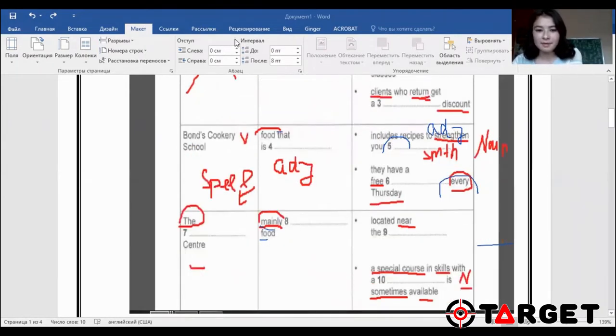They have a free something every Thursday. So again, we're going to put a noun, because there is a and free. We have an adjective. So we need only a noun. And number seven, usually in questions like that, when we write a name or address, usually it will be spelled, but it's not always like that. Sometimes you may guess yourself. If it's easy, if it's common one, like the word red, black, saint, they're not going to spell it. But if it's new one, they will definitely spell it.